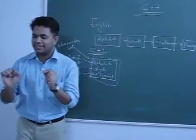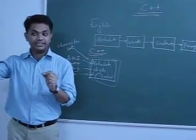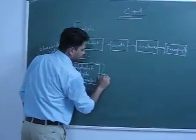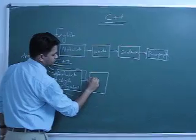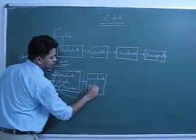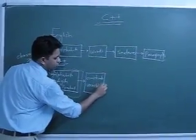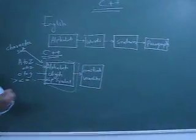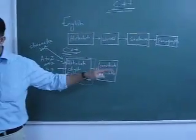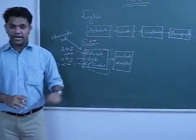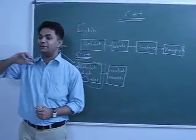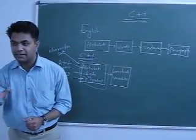Now let us move ahead to something called constants and variables. Constants are something whose value never changes. Variables are something whose value keeps on changing, keeps on varying — that is why it is called a variable.